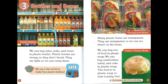Chapter 3: Bottles and Boxes. We can buy juice, soda, and water in plastic bottles. Plastic bottles are strong, so they don't break. They are light, so we can carry them. Discover! We use one liter of oil to make four plastic bottles.